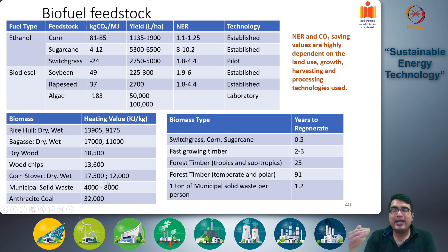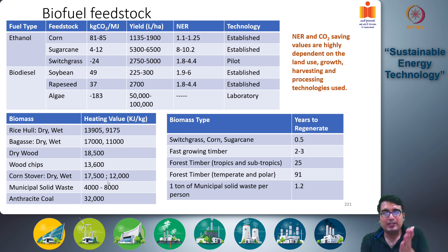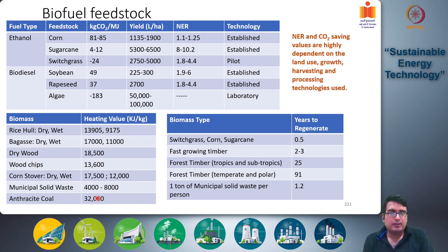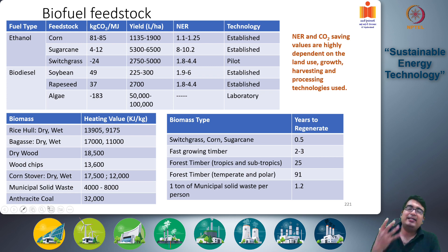Now we will look at some major properties of biofuels when used as combustion sources. The most important property is heating value — how much heat is liberated when you burn one kilogram of a substance. For reference, anthracite coal has a heating value of 32,000 kilojoules per kg, and methane has a heating value of 50,000 to 60,000 kilojoules per kg. These benchmarks help compare solid biomass materials with classic fossil fuels.